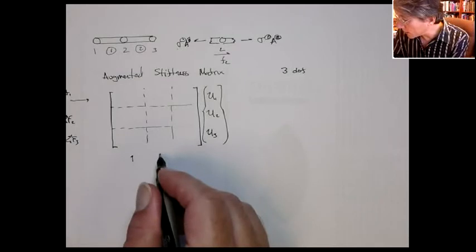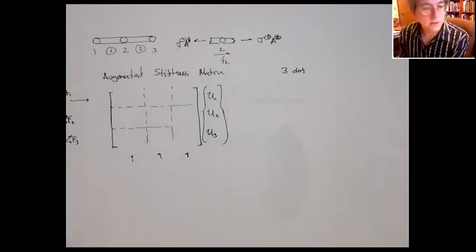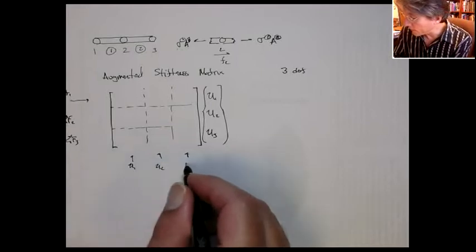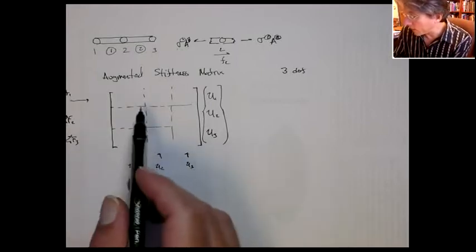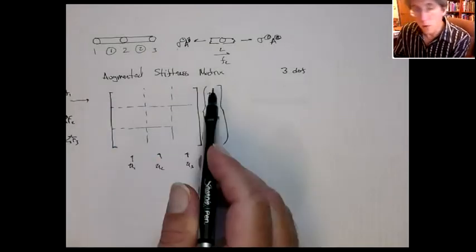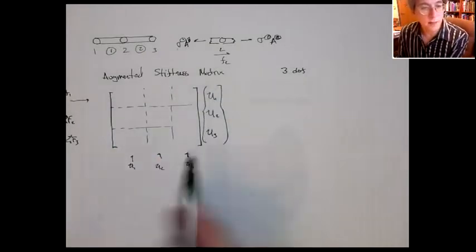Whereas the columns are associated with the actual global degrees of freedom, U1, U2, and U3. And that comes about because of the way we do matrix vector multiplication, and you have the dot product of the row of the matrix with the column of the unknowns.